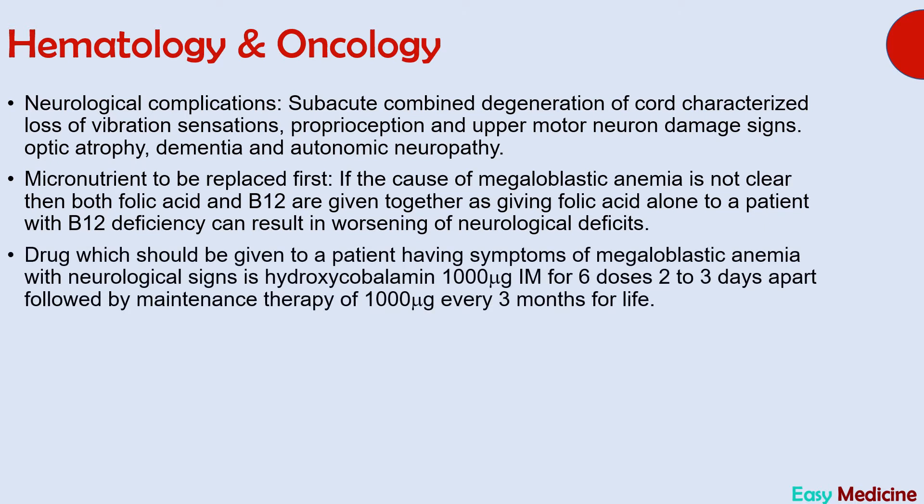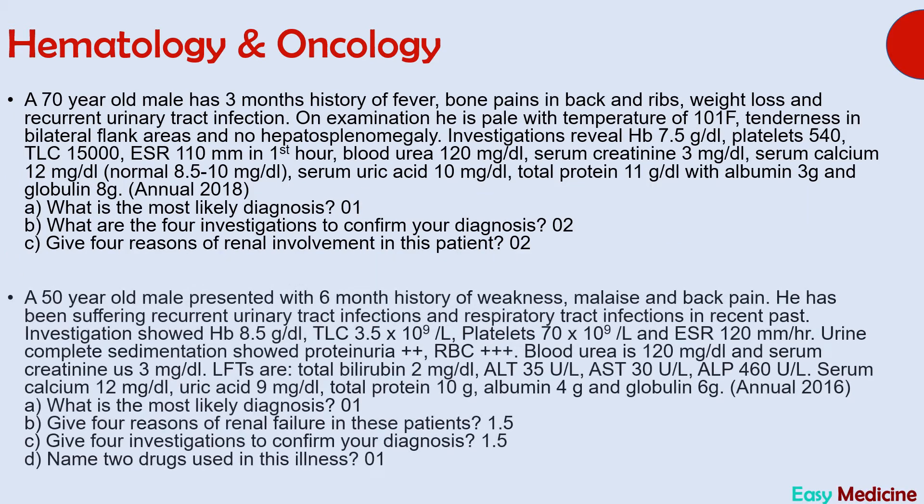The drug to give a patient of megaloblastic anemia with neurological signs is hydroxocobalamin 1000 micrograms intramuscular for six doses, two to three days apart, followed by maintenance therapy of 1000 micrograms every three months for life. You need to remember these doses as the question asked how you would administer this drug.